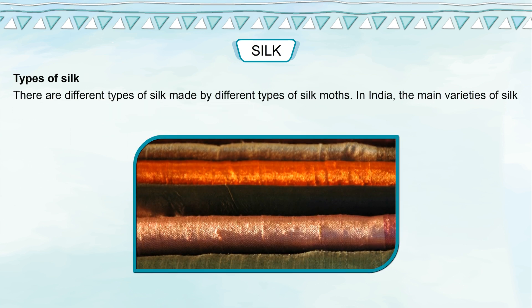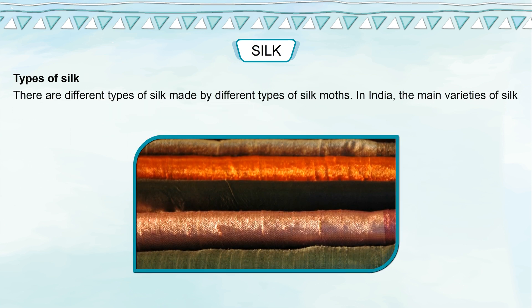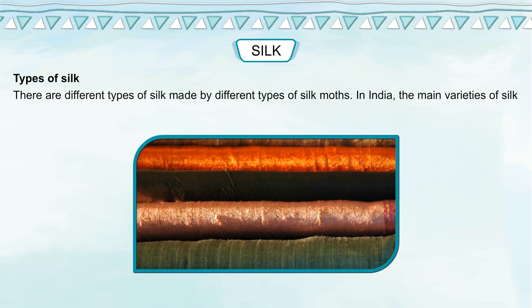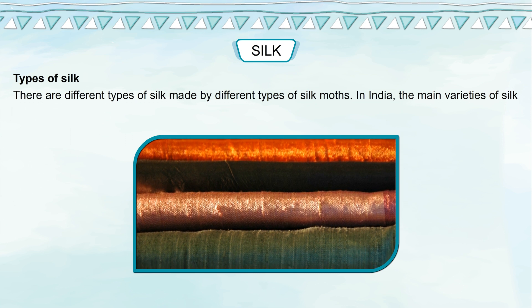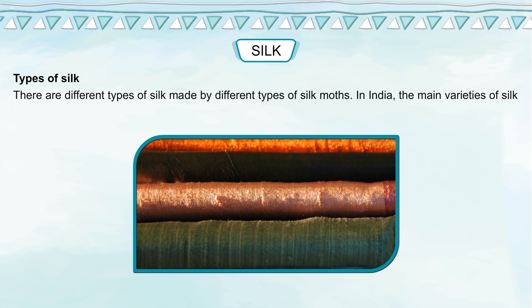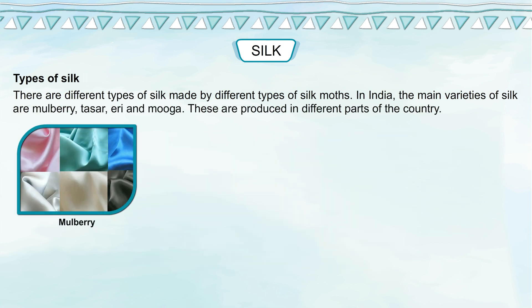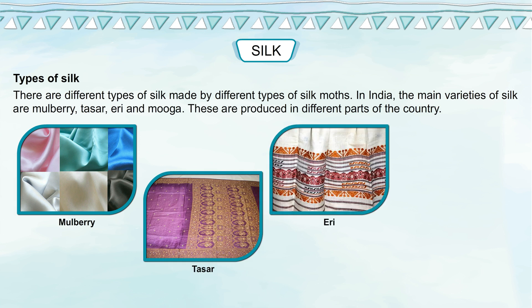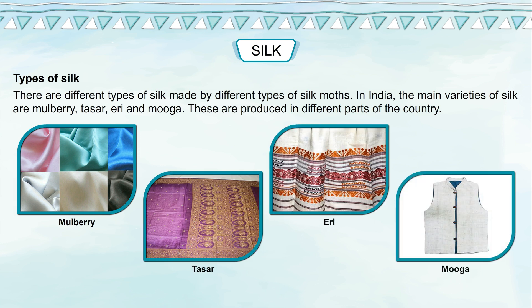There are different types of silk made by different types of silk moths. In India, the main varieties of silk are mulberry, tasar, eri and mooga, and these are produced in different parts of the country.